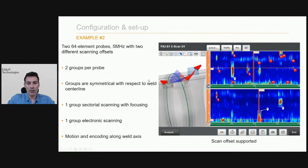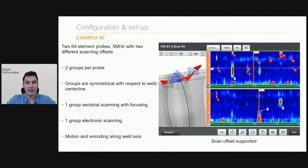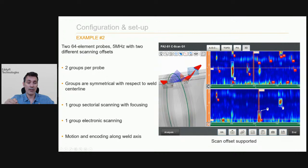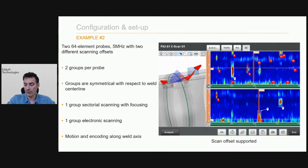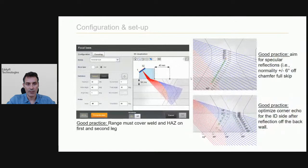In another example, we have two 64-element array probes with an offset along the axis scan — so you can deal with scan offset. Each probe does a sectoral scan and a linear scan at the same time. The module knows how to handle all four groups and provide information about indications. Everything is based on good practice.